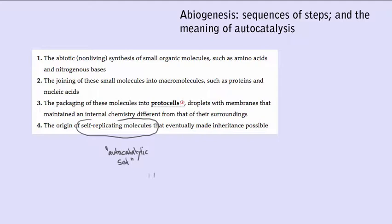Besides the membrane you would need a set of molecules that, given raw materials available from the outside world, would be capable of catalyzing the synthesis of every single molecule in the set plus the molecules comprising the membrane. So you've got a self-catalyzing, that is autocatalytic, set of molecules encased in a membrane. After a while all that catalysis would result in there being more of everything — enough for this entity to split into two more or less equivalent halves. This is basically binary fission, or cell division, and the whole unit undergoing the fission would be the cell.